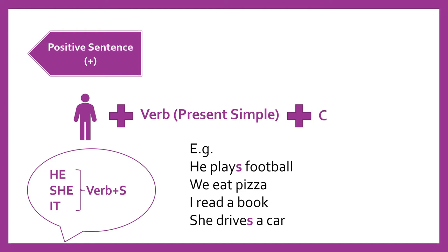For example, he plays football. As you can see here, we add an S to the verb play because we're using the pronoun he. Como puedes ver acá, le vamos a agregar una S al verbo play porque estamos utilizando el pronombre he. We eat pizza — nosotros comemos pizza. Aquí no agregamos ninguna S porque no estamos utilizando el pronombre he, she, o it; estamos utilizando el pronombre we.